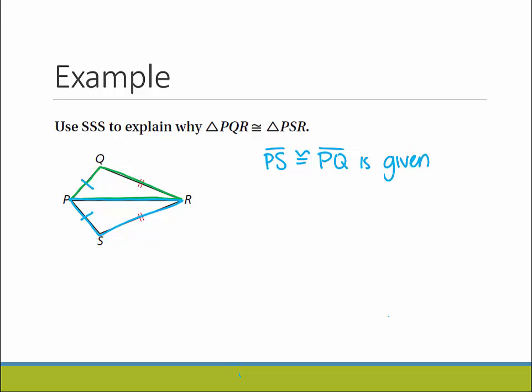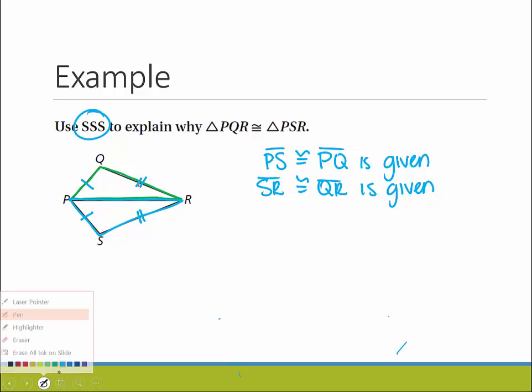We can also see that SR is congruent to QR. If we're using side-side-side, we have to prove that three sides are congruent. So we got two of them down.